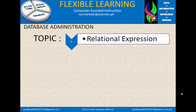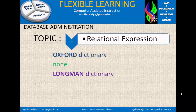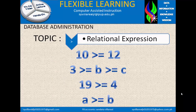What is greater than or equal? In Oxford, Longman, and Merriam Dictionary, there is none. Example: 10 is greater than or equal to 12 — this is false. 3 is greater than or equal to B, and greater than or equal to C — true or false. 19 is greater than or equal to 4 — this is true. And A is greater than or equal to B — true or false.